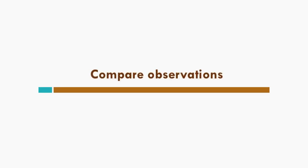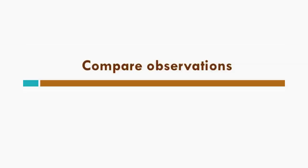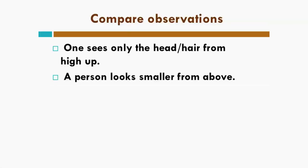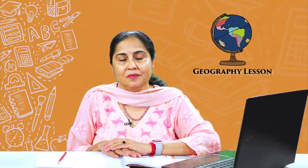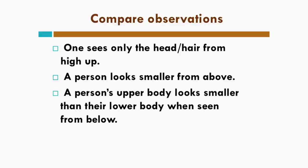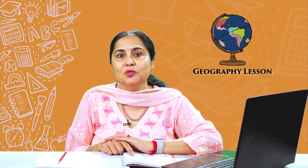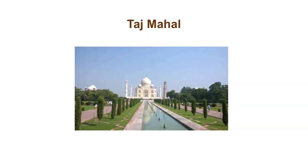Now it is time to compare your observations. You have observed things from the ground level and also at the terrace of your building. When you are at the terrace, you were looking at people — one sees only the head and hair from high up. We do not see the features. A person looks smaller from above. But the same thing, if we are looking at a person at the ground level, a person's upper body looks smaller than their lower body when seen from below. So these were your observations too. If you have not done this activity, you must do it and then compare the notes.